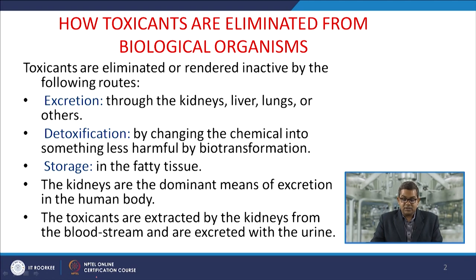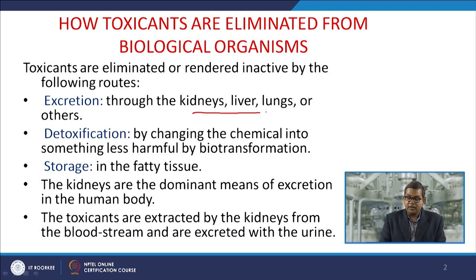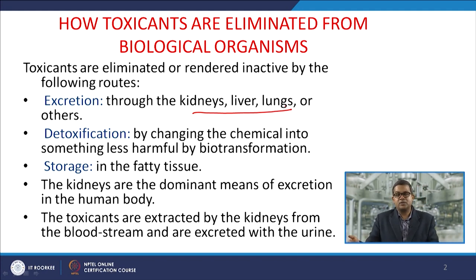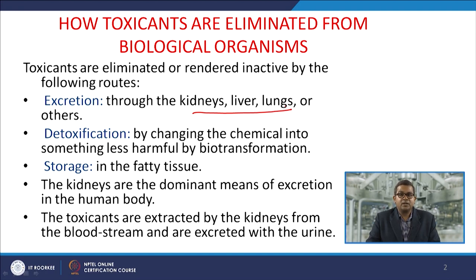The first three routes — kidney, liver, and lungs — are provided by nature. Once you are exposed to a toxic environment, whether through inhalation or dermal absorption, the kidney, liver, and lungs try to repel the effect of that particular toxicant from the body system.